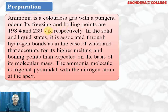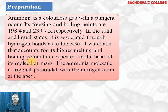Ammonia is a colorless gas with a pungent smell. Its freezing and boiling points are 198.4 and 239.7 Kelvin respectively. In the solid and liquid state, it is associated with intermolecular hydrogen bonding, as with water, and that is the reason for its higher boiling and melting points than expected from its molecular mass.